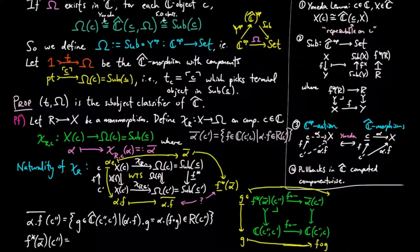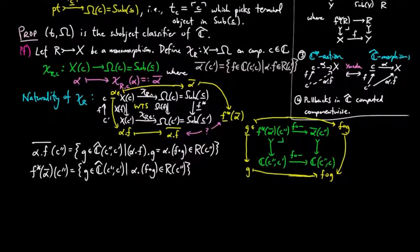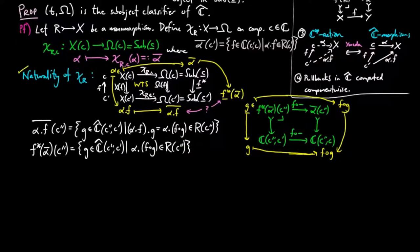But this means that G is a C double-prime figure of underline F upper star alpha bar, if and only if FG is a C-prime figure of alpha bar. And thus, this set consists of those C-morphisms G from C double-prime to C-prime, such that alpha dot FG is a C double-prime figure of R. Therefore, chi sub R is natural and defines a morphism from X to omega.